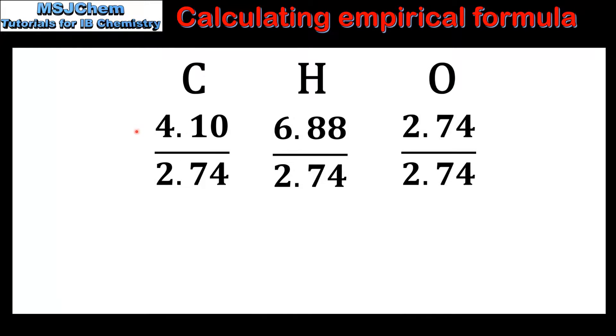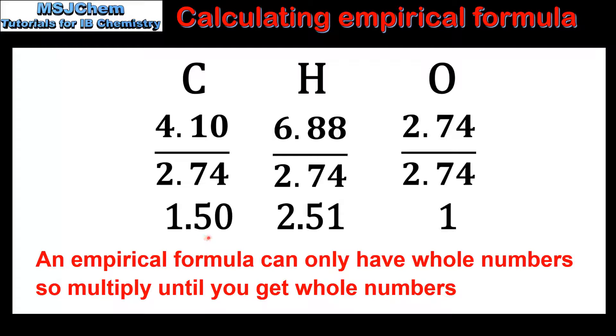The next step is to divide each amount in moles by the smallest value which is 2.74. And this gives us 1.50 for carbon, 2.51 for hydrogen, and 1 for oxygen.